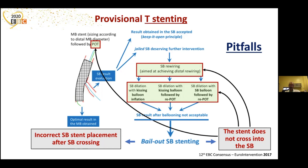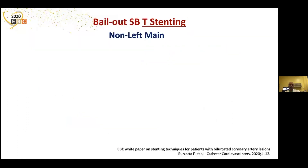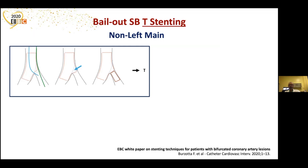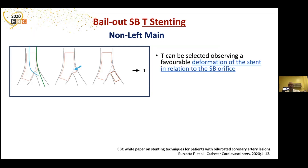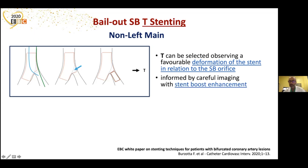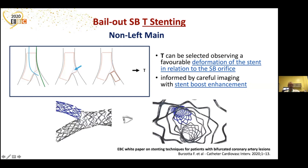Starting with when the stent does not cross into the side branch, we'll talk about bailout side branch stenting in non-left main, and this is what we mean for T. T can be selected by observing a favorable deformation of the stent in relation to the side branch orifice. When you confirm a distal crossing and you have this favorable deformation, you can do a T. This can be informed also by careful imaging with stent boost enhancement, and the goal is to achieve this result.